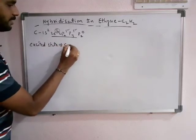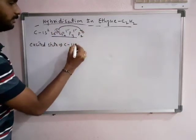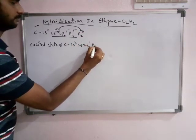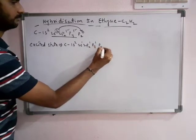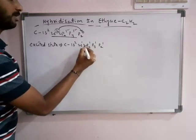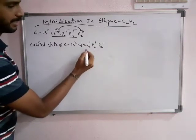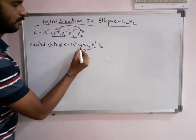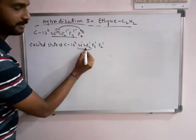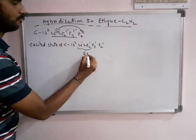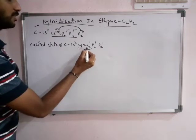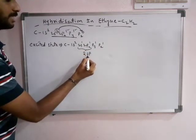In the excited state, the electrons are shifted. Now its configuration becomes 1s2, 2s1, 2px1, 2py1, 2pz1. Now in this excited state condition, 1s orbital and 1p orbital undergo sp hybridization, forming two sp hybrid orbitals. The involvement of 1s and 1p means they are named sp hybrid orbitals.